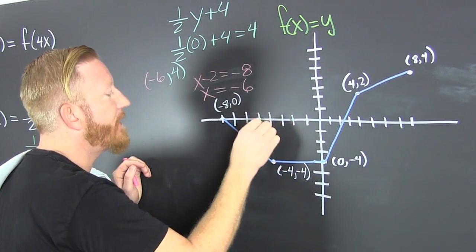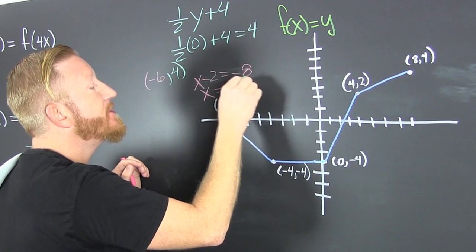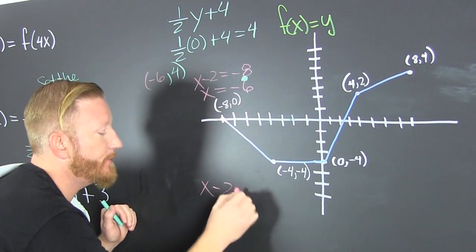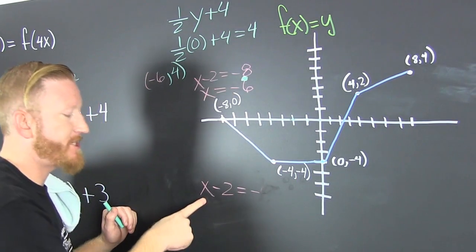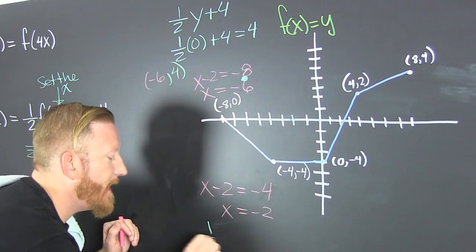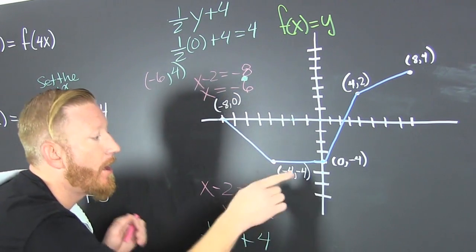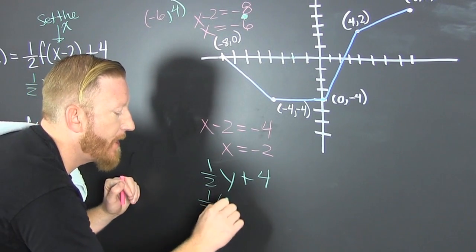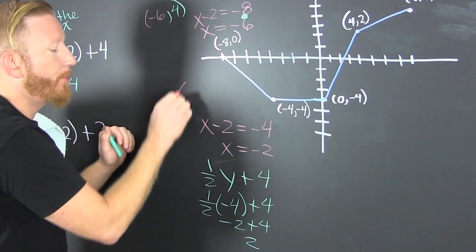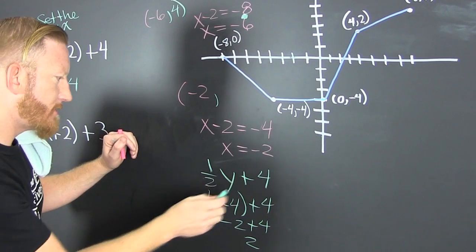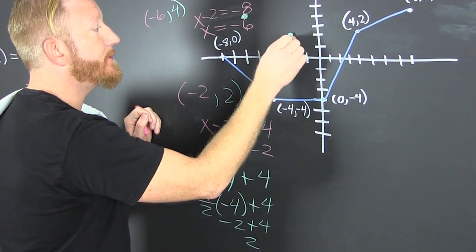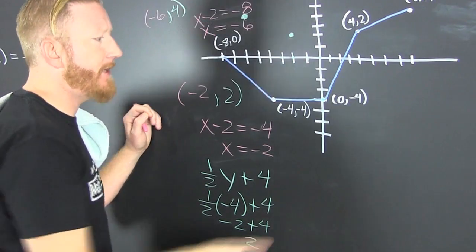So my new x is going to be minus 6 and 4. Now let's translate this one. x minus 2 is equal to minus 4. So our new x is going to be minus 2. What's our y? 1 half y plus 4. Our y is minus 4. So that's 1 half minus 4 plus 4. Minus 2 plus 4 is 2. So our new point is minus 2 and 2.